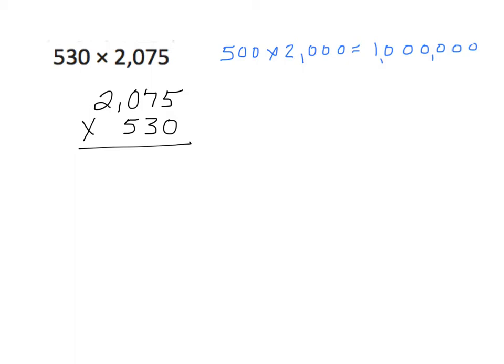The other thing I know about this problem is I have 0 in the ones place, so 0 times 5 is 0, 0 times 7 is 0, 0 times 0 is 0, and 0 times 2 is 0. Some of you might be more comfortable putting in all those zeros — if it helps you keep track, so be it. So let's put in our zeros.